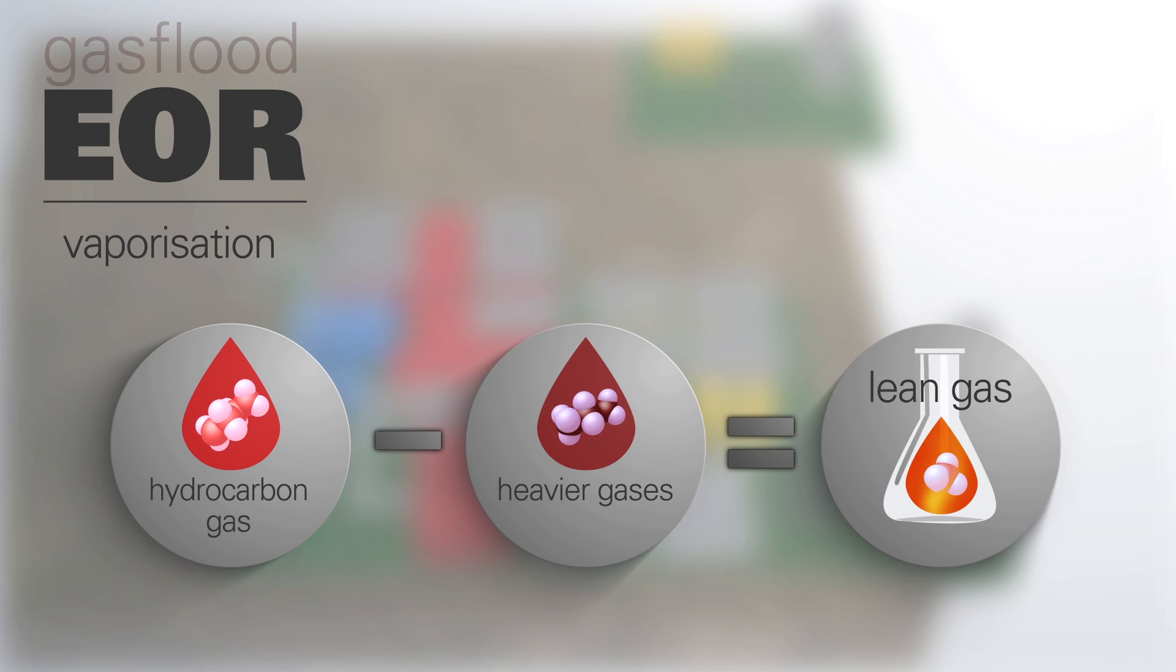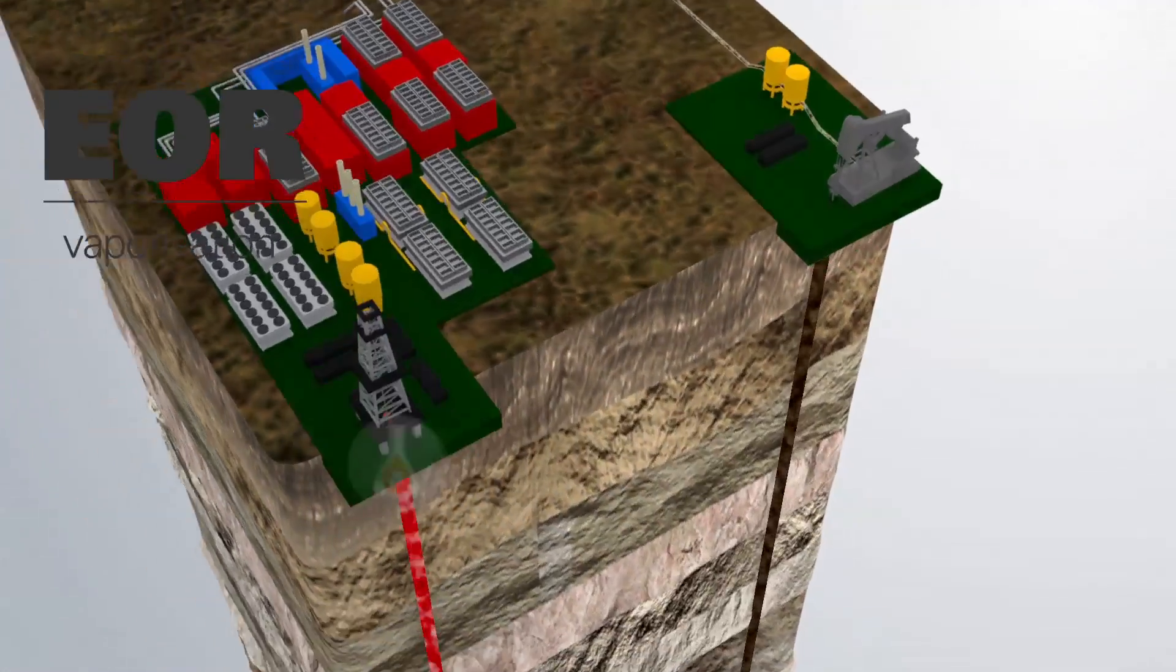This method uses produced hydrocarbon gas that has been stripped of the heavier gases, leaving typically only lean gas to be re-injected in the reservoir.